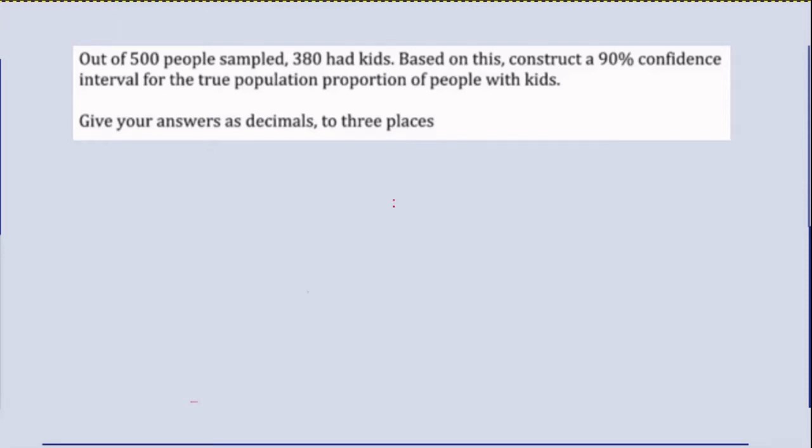This problem asks us to calculate a 90% confidence interval. The idea is that we've got some population of people we're interested in knowing what proportion of them have kids. We've got a categorical variable where we're looking to say does a person have kids or not, and we're looking at what proportion of them do have kids.